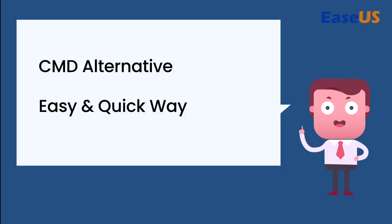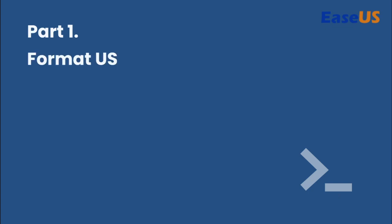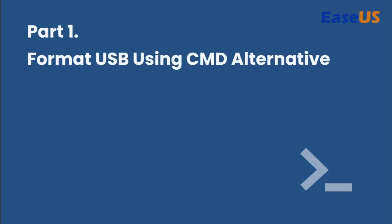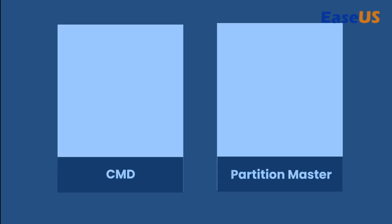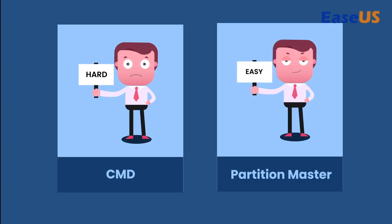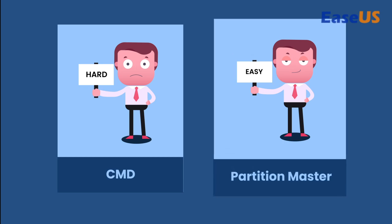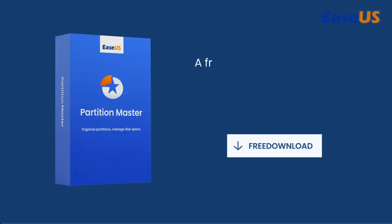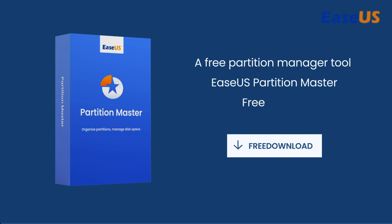Let's start to format your USB using CMD or its alternative tool and make the raw, inaccessible, unreadable, and even corrupted USB flash drive, pen drive, or memory stick work normally again. Part 1: Format USB Flash Drive Using CMD Alternative in Windows. Although you can format a USB from CMD, it's not user-friendly for most Windows beginners, and any improper operation may cause data loss on other storage devices. Here, we recommend trying third-party CMD Alternative Software — EaseUS Partition Master Free Edition, a free partition manager tool.